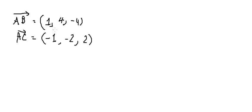If all the ratios are equal, that means the points are on the same straight line. If the ratios are not the same, that means they are not on the same straight line.